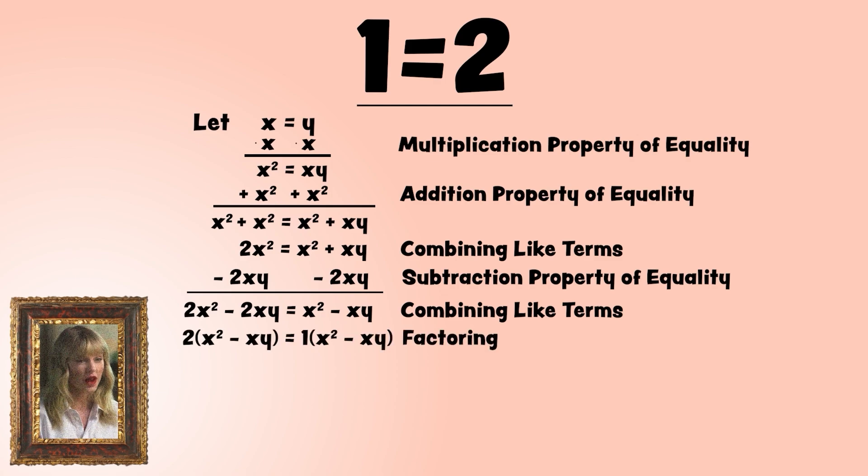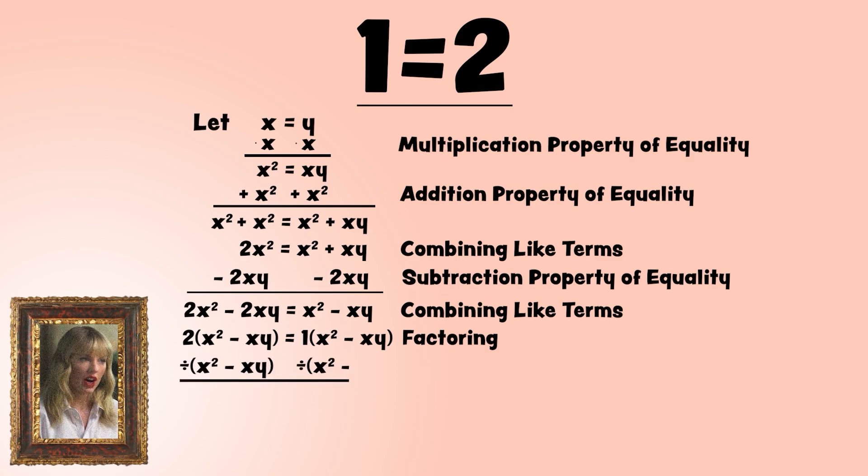Combining the xy terms on the right gives us x squared minus x times y. Now we can factor out the common factor from the left side. Note that we can factor out a one from the right side, even if at first glance, that only makes the expression look more complicated. Now using the division property of equality, we can divide both sides by the expression x squared minus x times y. And there we go.